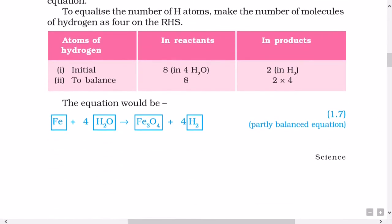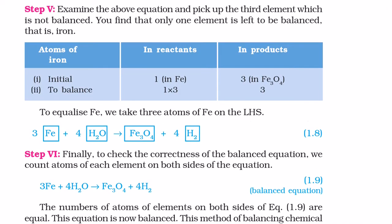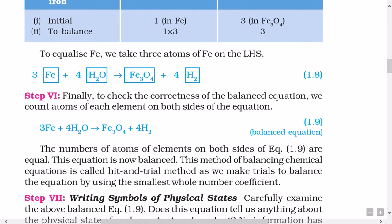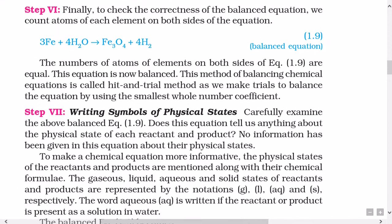The equation would be Fe plus 4H2O gives Fe3O4 plus 4H2. Step 5: Examine the above equation and pick up the third element which is not balanced. You find that only one element is left to be balanced, i.e. iron. To equalize Fe, we take 3 atoms of Fe on the LHS. Step 6: Finally, to check the correctness of the balanced equation, we count the atoms of each element on both sides of the equation. 3Fe plus 4H2O gives Fe3O4 plus 4H2. The numbers of atoms of elements on both sides of equation 1.9 are equal. This equation is now balanced. This method of balancing chemical equations is called hit and trial method, as we make trials to balance this equation by using the smallest whole number coefficient.